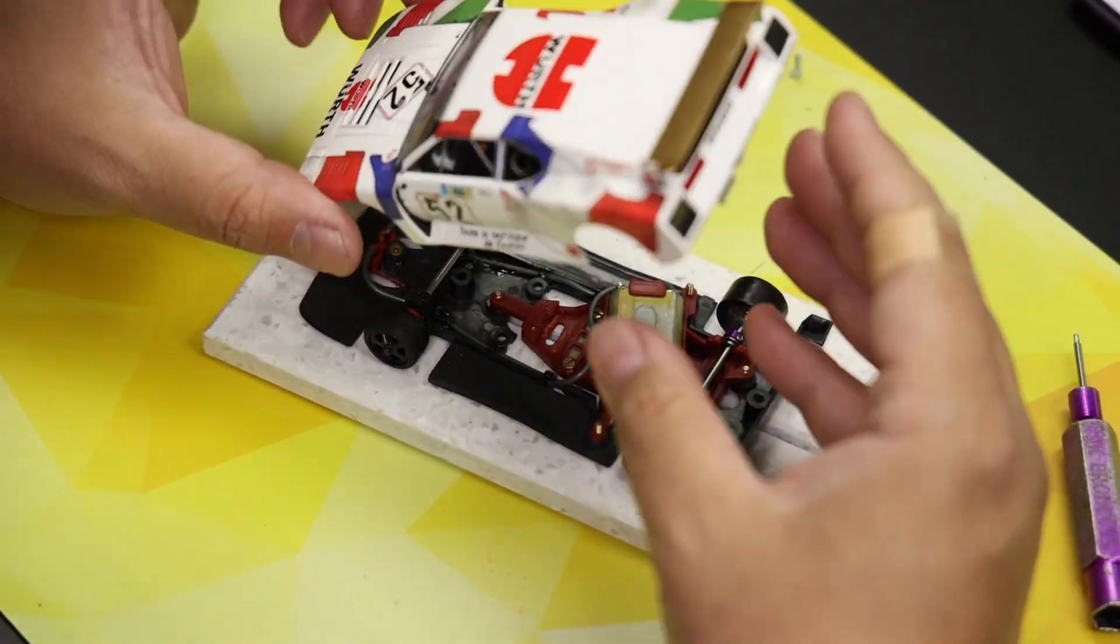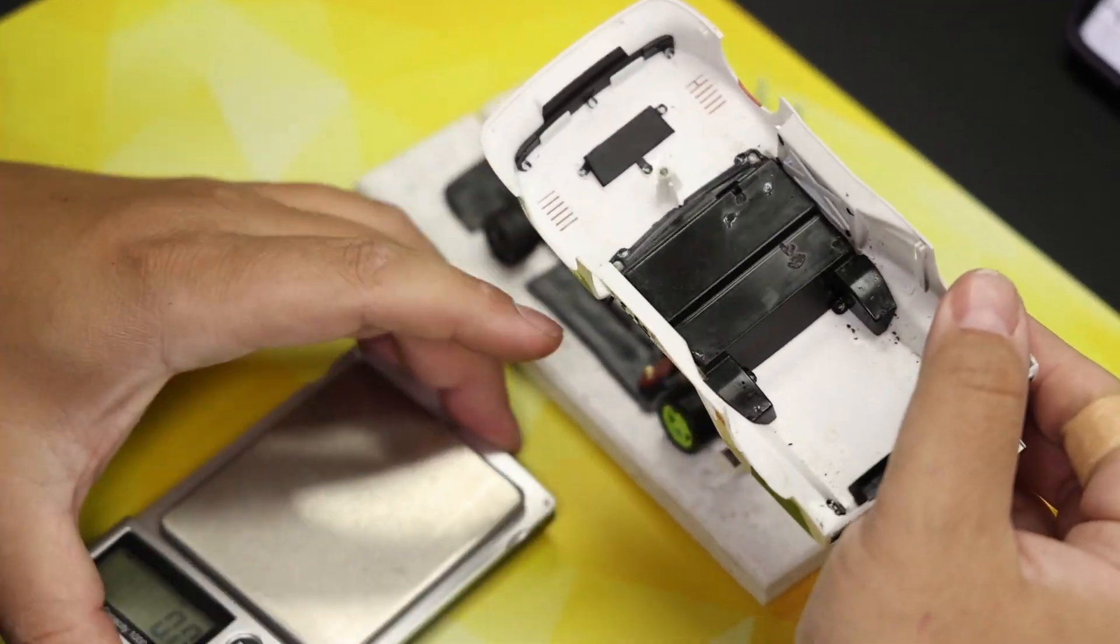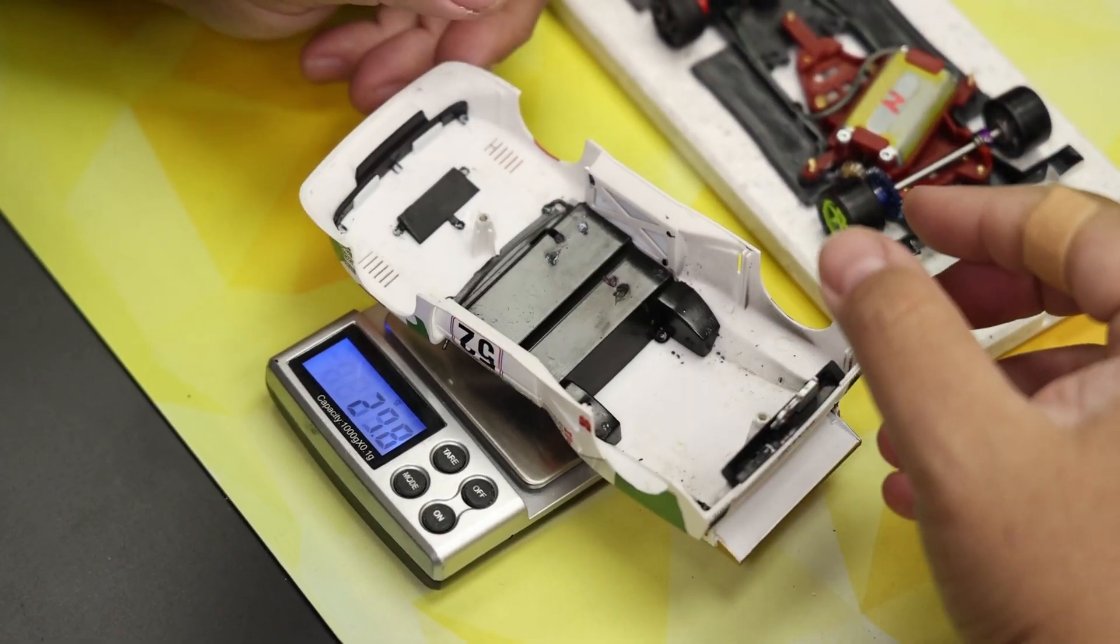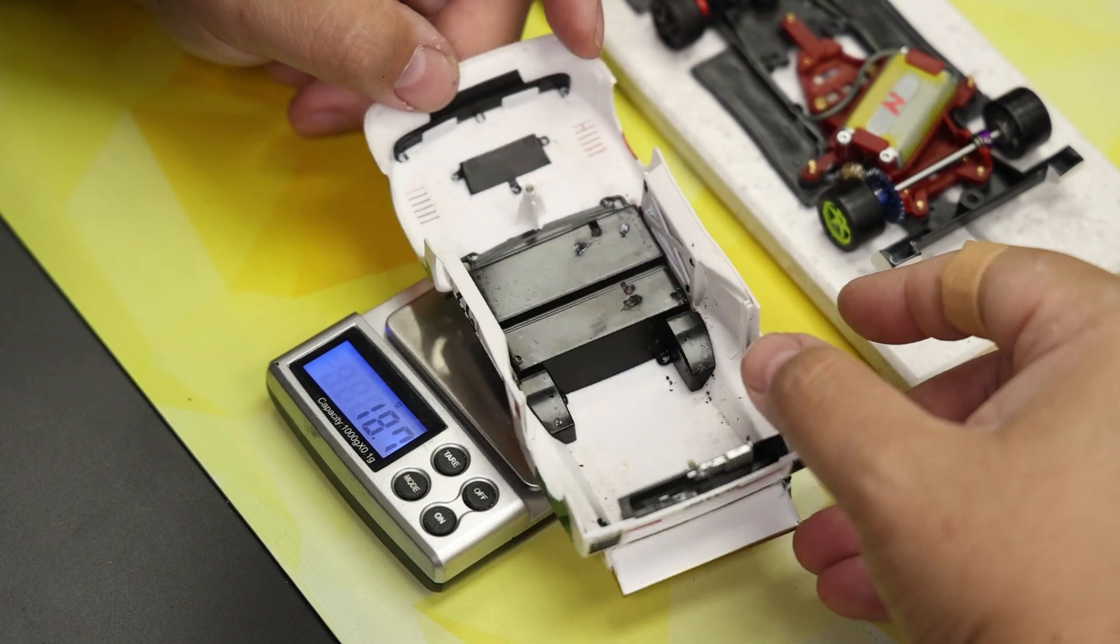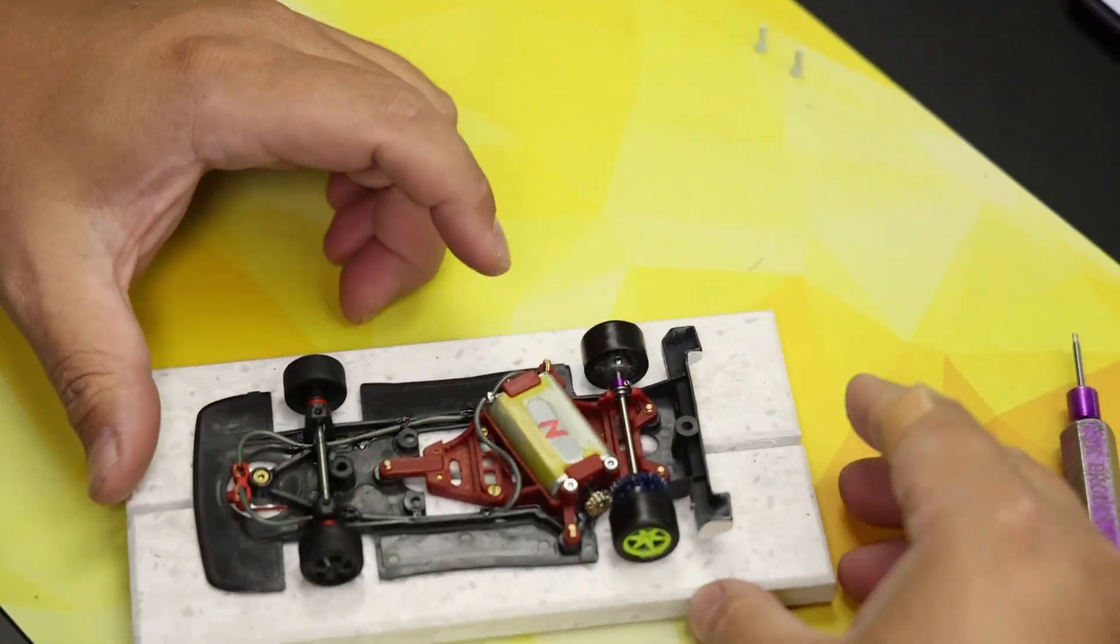Okay. Let's see the car. So the body pretty lightweight, nothing special about it. No sanding or anything. The body itself weighs 18.7 grams, which is completely normal for this class. Okay, let's take a look on the car.